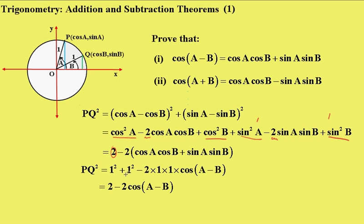So 1² + 1² is going to be just 2, and then this becomes -2, all that there becomes -2cos(A - B). Therefore PQ² = 2 - 2cos(A - B).